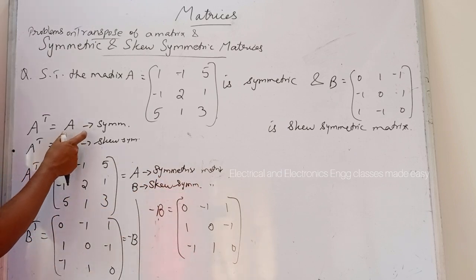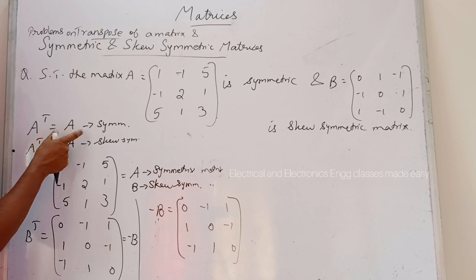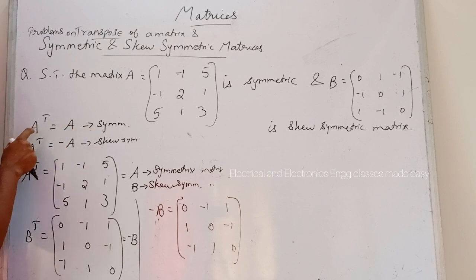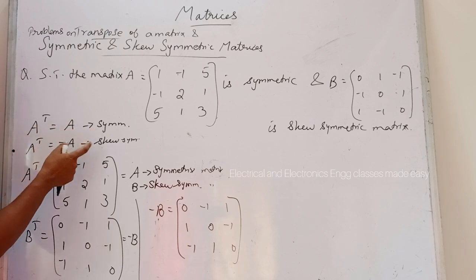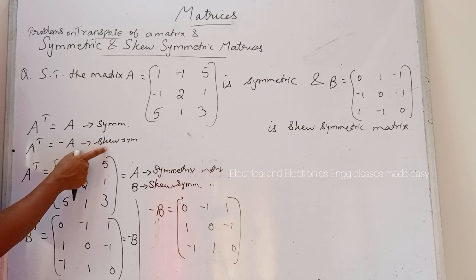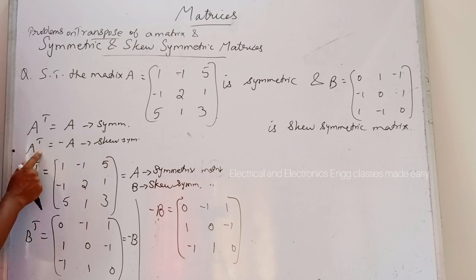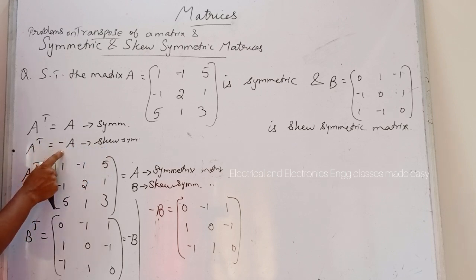To summarize: a matrix is symmetric when A transpose equals A, and skew-symmetric when A transpose equals -A.